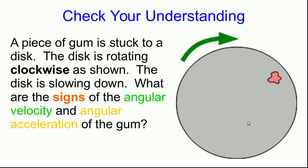What did you come up with for the signs of this angular velocity and angular acceleration? The angular velocity is the easy part. Our convention is that counterclockwise is positive, and this is going clockwise, and so the angular velocity must be negative.